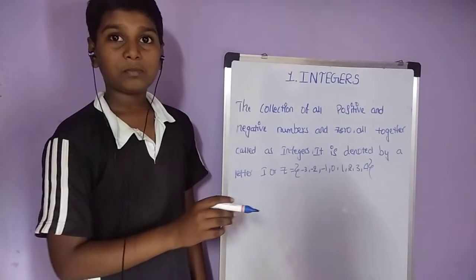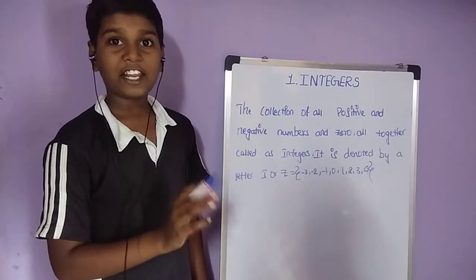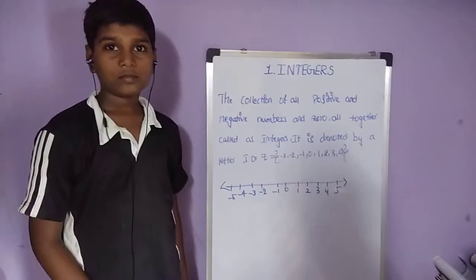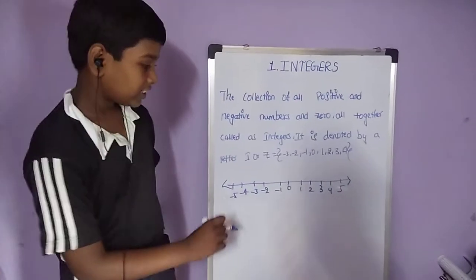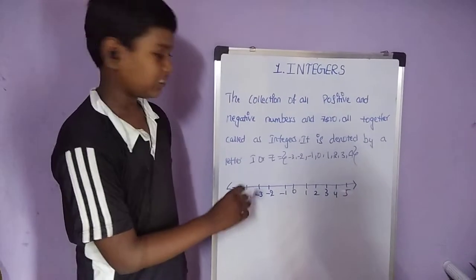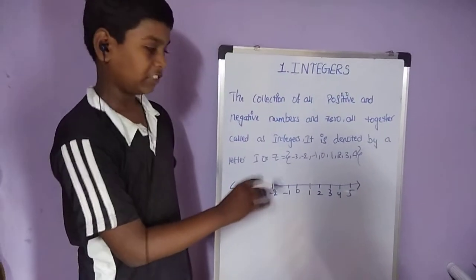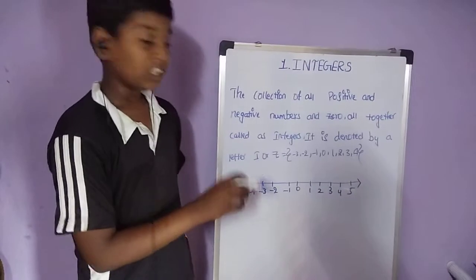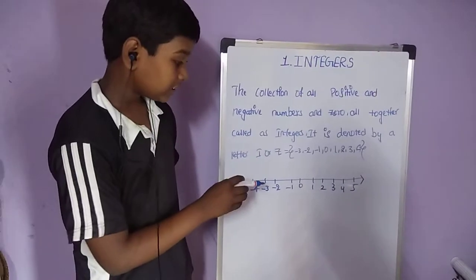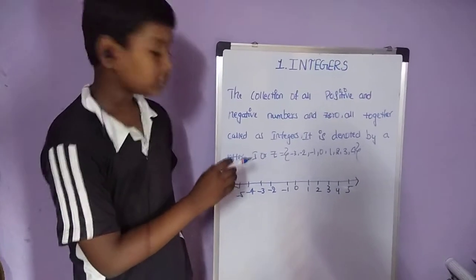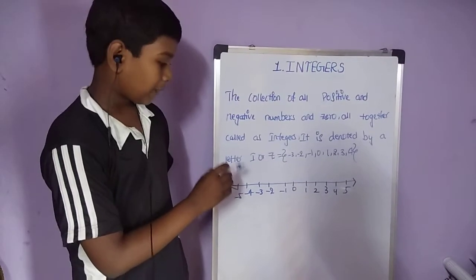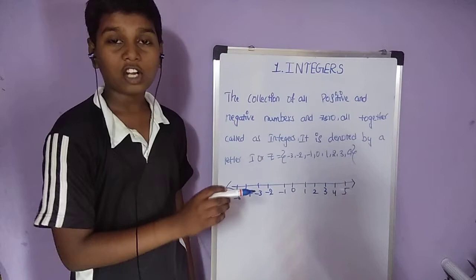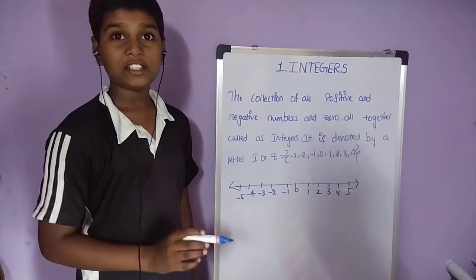Let us look at positive and negative integers. The numbers which come after 0 — 1, 2, 3, 4 — are called positive integers. The numbers which come before 0 — minus 1, minus 2, minus 3 — are called negative integers.